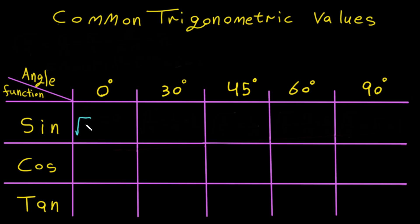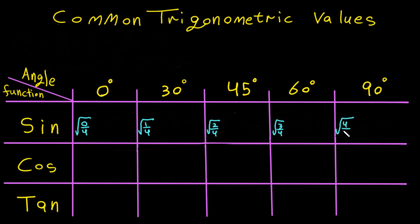We put square root of 0 over 4, starting with 0, then 1 over 4, then 2 over 4, then 3 over 4, and the last one is 4 over 4.